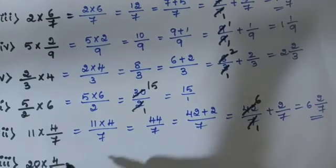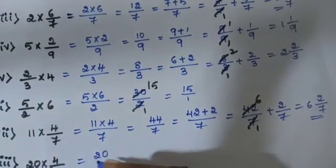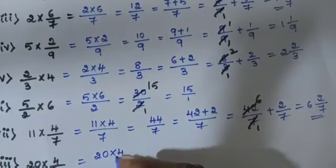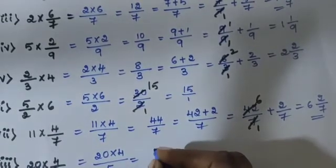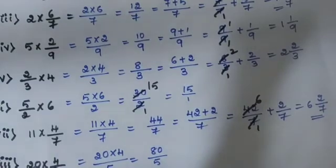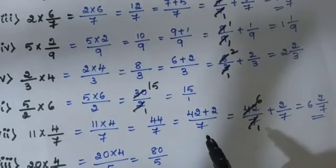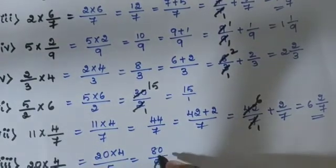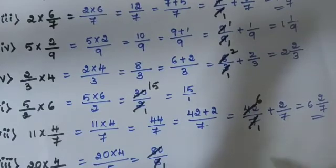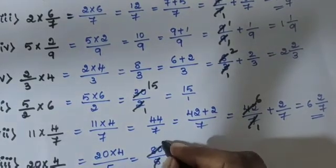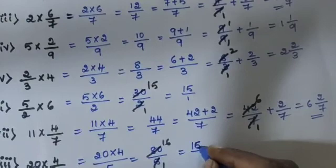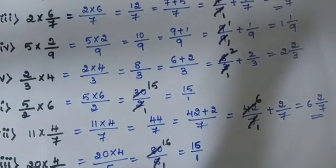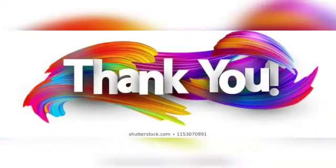Sub-question 8: 20 into 4 by 5. 20 is the whole number, multiplied by numerator 4, divided by denominator 5. 20 into 4 is 80, divided by 5. 80 divided by 5 — 5 sixteens are 80. Answer is 16 by 1, or 16.